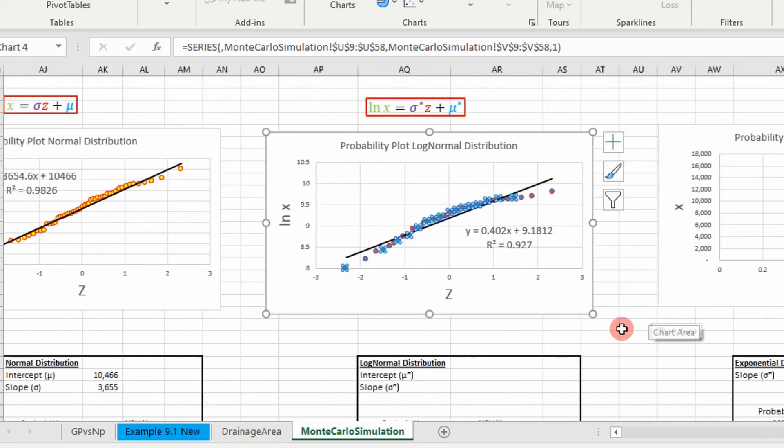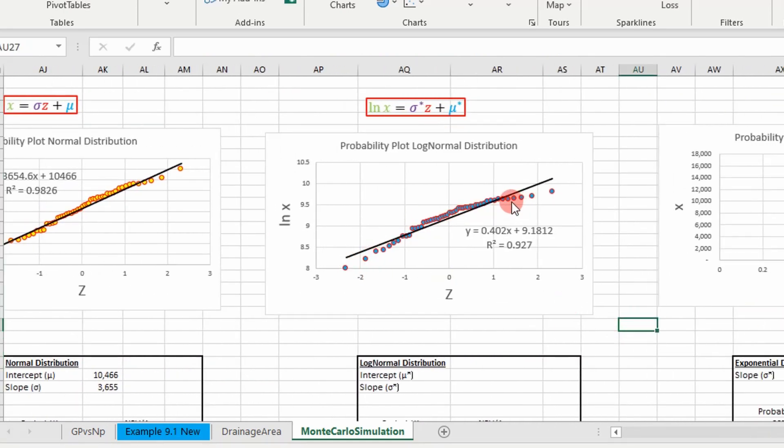You can see that we fit a straight line through it using linear regression and we end up with the equation of this form. So we can directly extract the standard deviation and mean of our log normal variables right here.